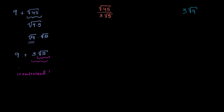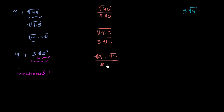Now let's think about this next expression. The numerator can be rewritten as the square root of 9 times 5, over 3 times the square root of 5. That's the same thing as the square root of 9 times the square root of 5, over 3 times the square root of 5. The square root of 5 cancels, and we're left with just 1 — or 1 over 1. And 1 is clearly a rational number; you could write it as 1 over 1, 2 over 2, 3 over 3, or any integer over itself. So this expression is rational.